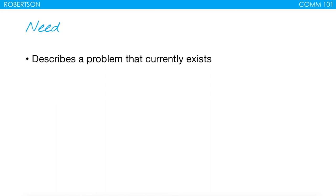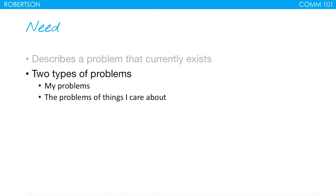The need describes a problem that currently exists. There are two types of problems: problems that directly affect you as an audience member, and problems of things that the audience cares about. Whoever your audience is, you might be directly addressing problems they have, or you might be showing them problems that don't directly affect them but that they could care about. Things your audience is directly experiencing now, or things you could get them to care about enough that they'd want to eventually take action.